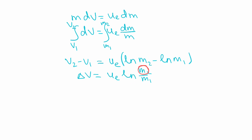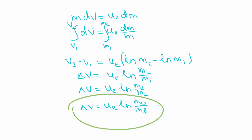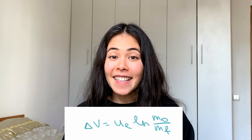Using logarithm properties, the difference of two logs becomes the log of the ratio. The left side, v2 minus v1, we now call delta-v. Since m2 is smaller than m1 (fuel has burned, rocket is lighter), the ratio m2/m1 is less than one and its log is negative. To avoid a negative value, we swap the ratio, writing delta-v = u_e · ln(m1/m2), where m1 is called m0 or initial mass and m2 is the final mass after fuel burn.